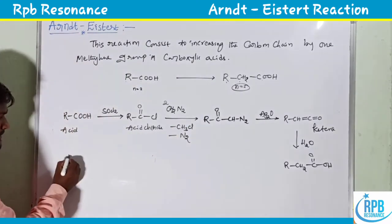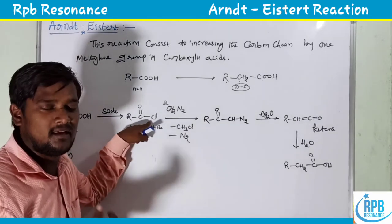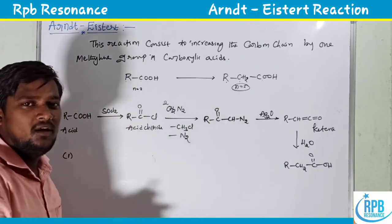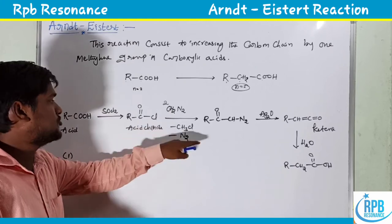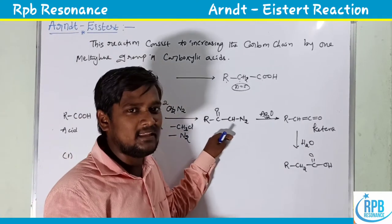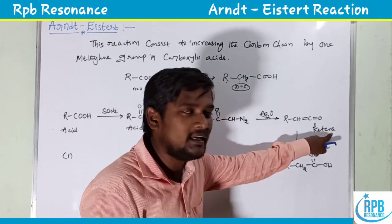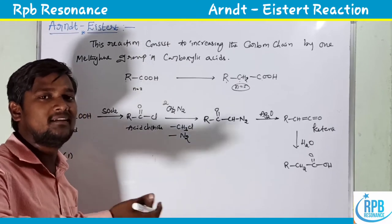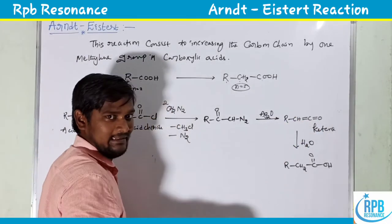The first step is conversion of carboxylic acid to acid chloride. In the second step, excess diazomethane — about 2.1 equivalents — is used to give the diazo ketone derivative R-CO-CHN₂. In the third step, silver oxide as catalyst gives ketene, and hydrolysis yields the carboxylic acid with one extra methylene group.